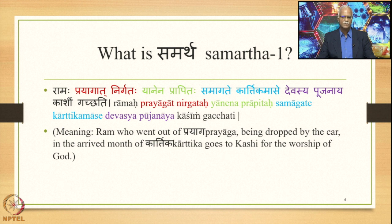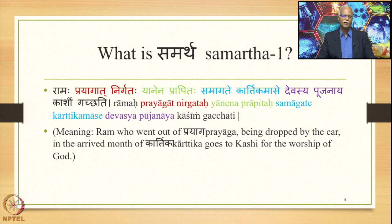Here is the first answer. If we add something more to the existing sentence — Ramaha Prayagat Nirgataha Yanena Prapitaha Samagate Kartikamase Devasya Poojanaya Kashimgachati — the meaning is: Rama who went out of Prayagat (Nirgataha), being dropped by the car (Yanena Prapitaha), in the arrived month of Kartika (Samagate Kartikamase), goes to Kashi (Kashimgachati) for the worship of God (Devasya Poojanaya).